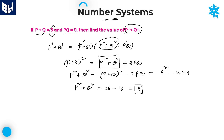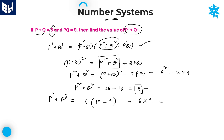That is the value of p square plus q square. Now substitute p square plus q square into the expression to get p cube plus q cube. p cube plus q cube is equal to p plus q, that is 6, into p square plus q square, which is 18, minus pq, which is 9. So it is 6 into 18 minus 9, which is 6 into 9, equal to 54. p cube plus q cube is equal to 54. That is the required answer.